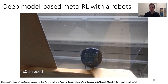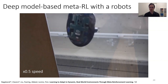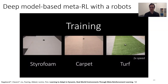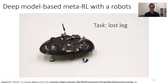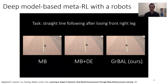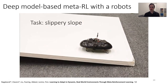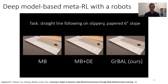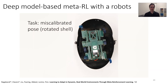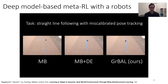We can use this method in the real world. Anusha applied it to the Veloceroach robot developed in Professor Fearing's lab — a hexapodal robot — making it walk on different terrains and slopes. For training, data is collected walking on just three different terrains. We then test on other conditions: leg amputation, slippery upward slopes not seen during training, and simulated sensor miscalibration by rotating the shell. Comparing standard model-based RL, naive adaptation, and our meta-learning method, the meta-learning method called GrBAL manages to stay closest to the center line in all conditions, adapting very quickly to each perturbation. So model-based meta-RL does actually work in the real world.